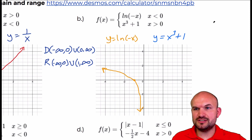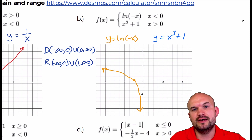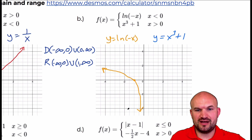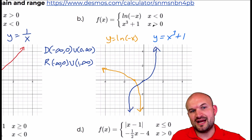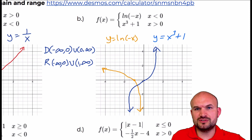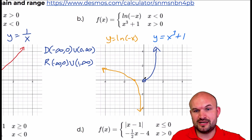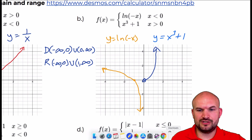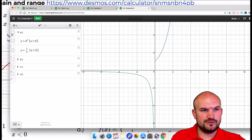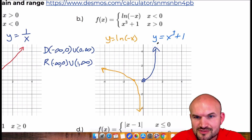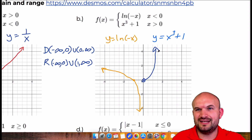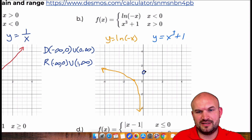The next one says x cubed plus 1. The cube graph is kind of an s-curve, and it's only going to be for x greater than 0. Since my graph would look like this, I'm only going to graph the portion where x values are positive, and 0 is not defined so I'll include a hole there. Let me verify — oh, I forgot to do my transformation. X cubed plus 1 means this whole graph needs to be shifted up 1 unit.